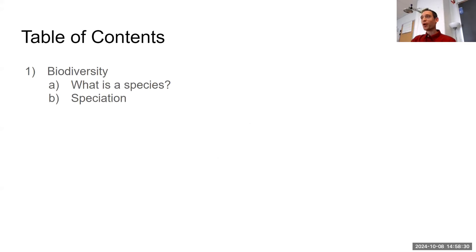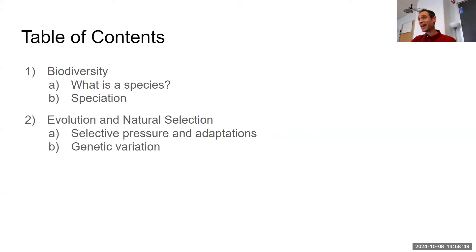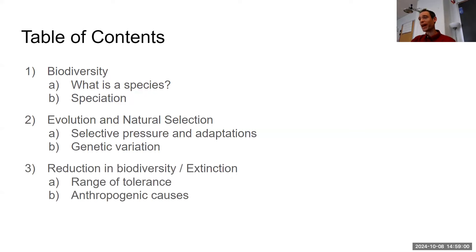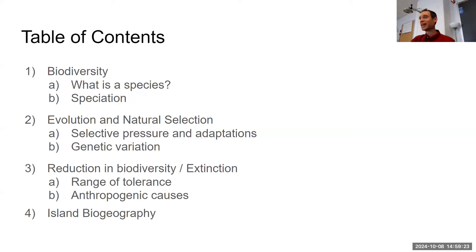Here is our table of contents. We are going to begin with defining biodiversity and what a species actually is, then speciation — how do we get new species and add them to the library of species on Earth. Then we'll cover evolution and natural selection, reductions in biodiversity and extinctions, and finally island biogeography, since islands have unique circumstances due to their isolation.